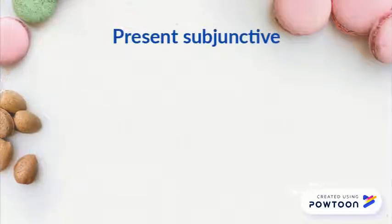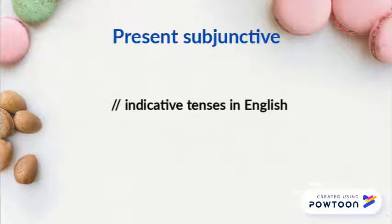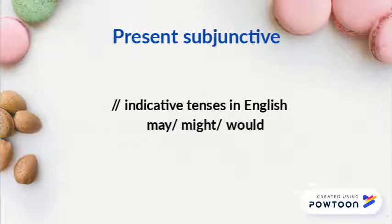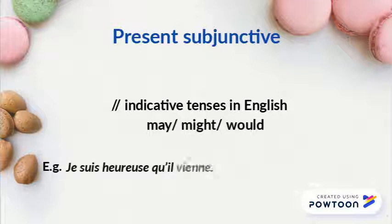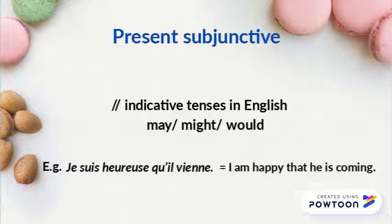The present subjunctive corresponds to indicative tenses in English, or expressions such as may, might, or would, to express uncertainty. For instance, 'je suis heureuse qu'il vienne' means 'I am happy that he is coming.'